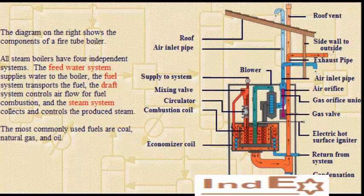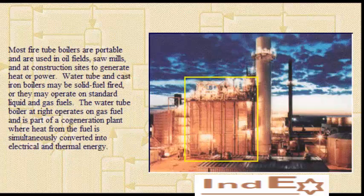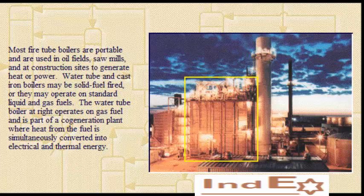The most commonly used fuels are coal, natural gas, and oil. Most fire tube boilers are portable and are used in oil fields, sawmills, and at construction sites to generate heat or power.